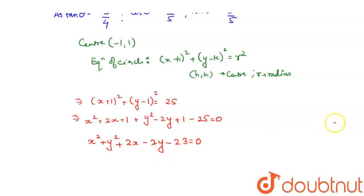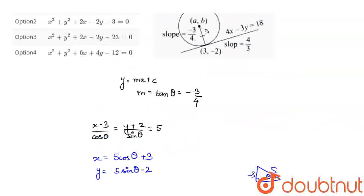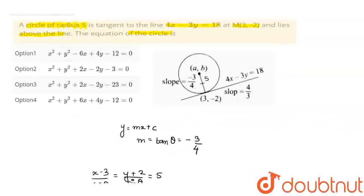So I will check which is the suitable option and I find that option 3 is the most suitable option, which says x square plus y square plus 2x minus 2y minus 23 is equal to 0. So I hope you understood the explanation, thank you.